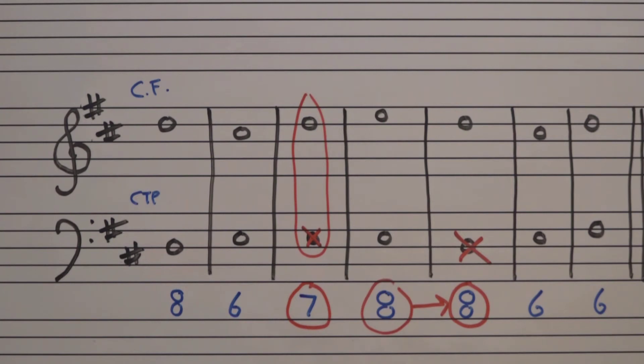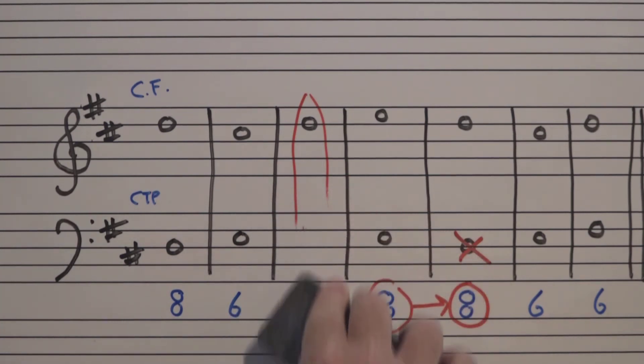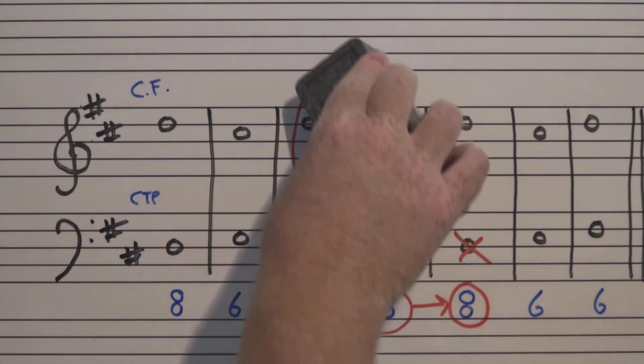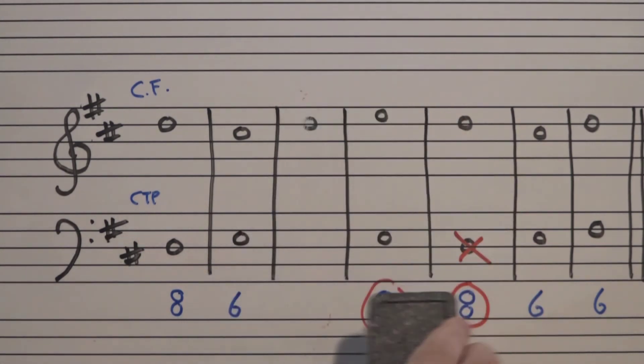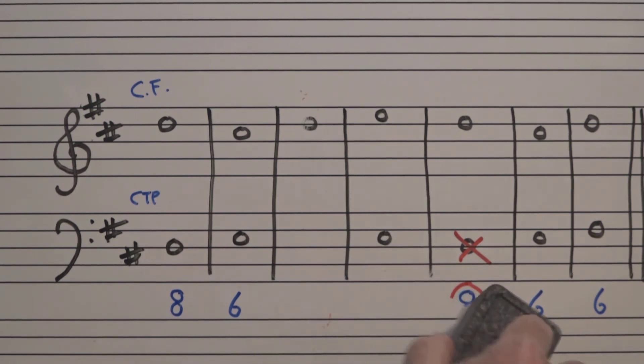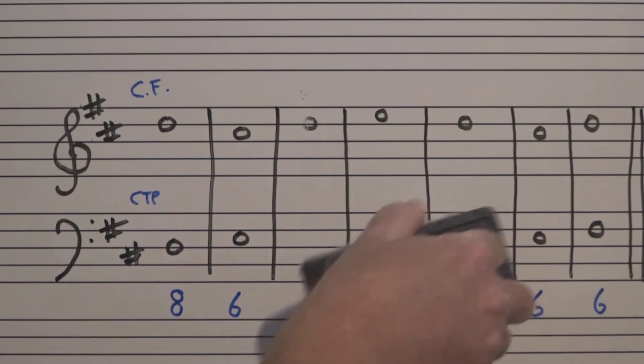So those are two big rules for writing a counterpoint line. So let's see if we can fix these two notes. Remember, it's not necessarily the problem that that one's an octave. It's that this one's an octave.